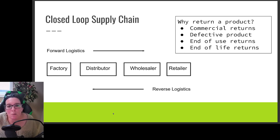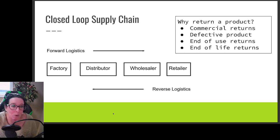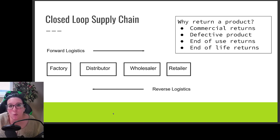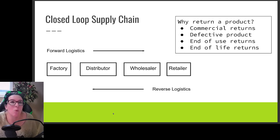This is what is called reverse logistics. Materials can move backwards through the supply chain because we simply return something because it doesn't match what we want. Maybe it's defective product — you bought a TV at Best Buy, it doesn't work, it's broken, you return it to Best Buy. What does Best Buy do with it?